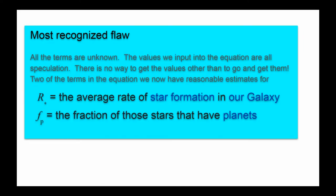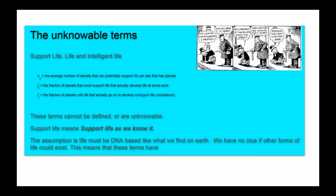The most recognized flaw in the Drake equation is that all the terms are unknown. The values we input into the equation are speculation. There's no way to get the values other than to go out and get them. Two of the terms in the equation, we are sort of getting the idea of the answers, the rate of star formation and the stars that have planets, but the rest of the numbers are all make-believe. In fact, three of them, at least, aren't even defined or are completely unknowable.